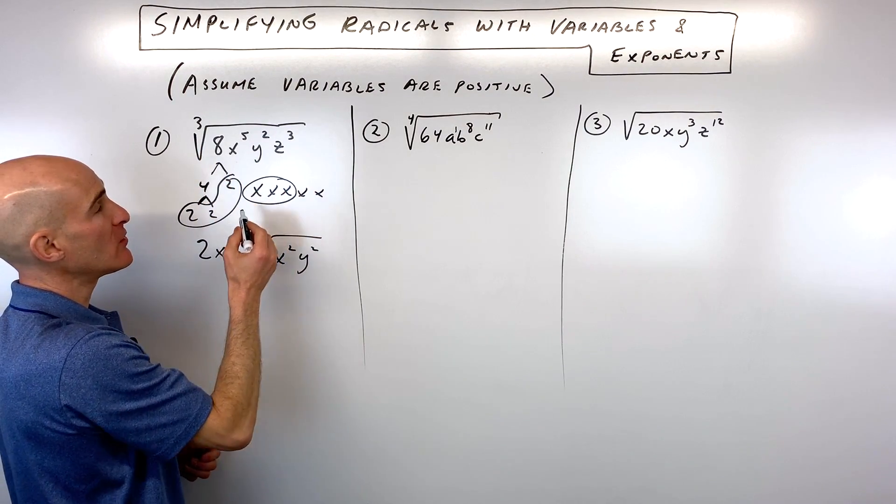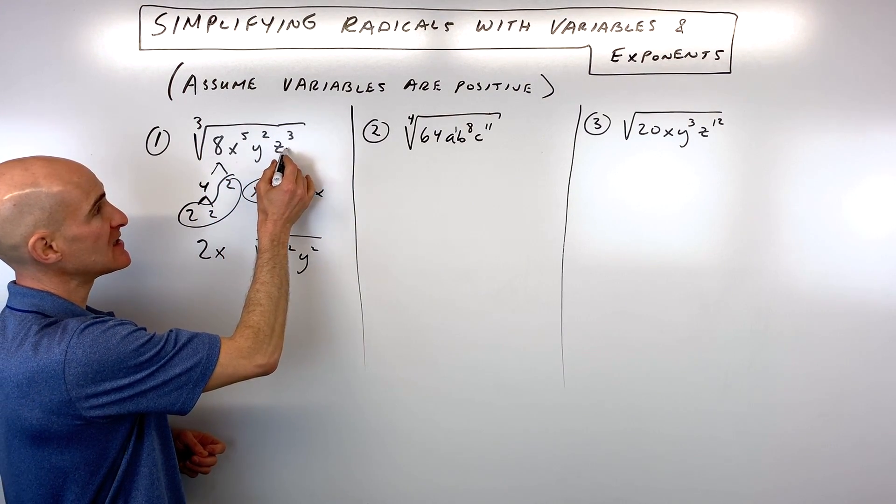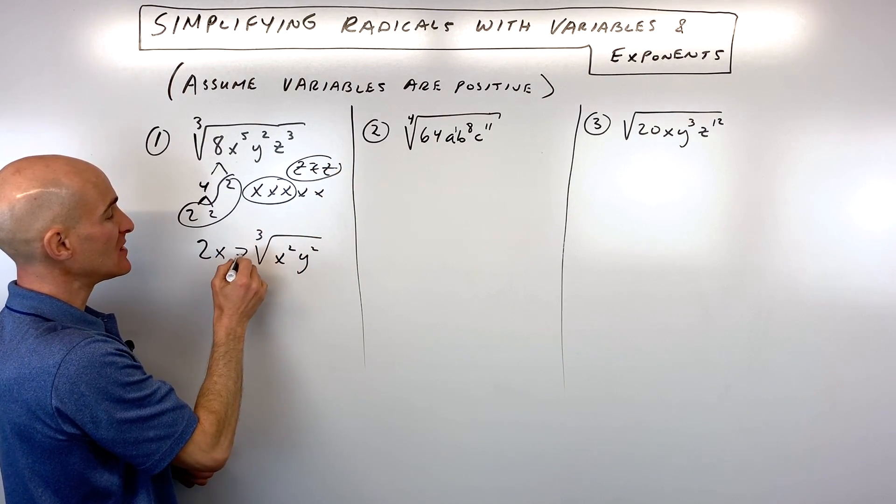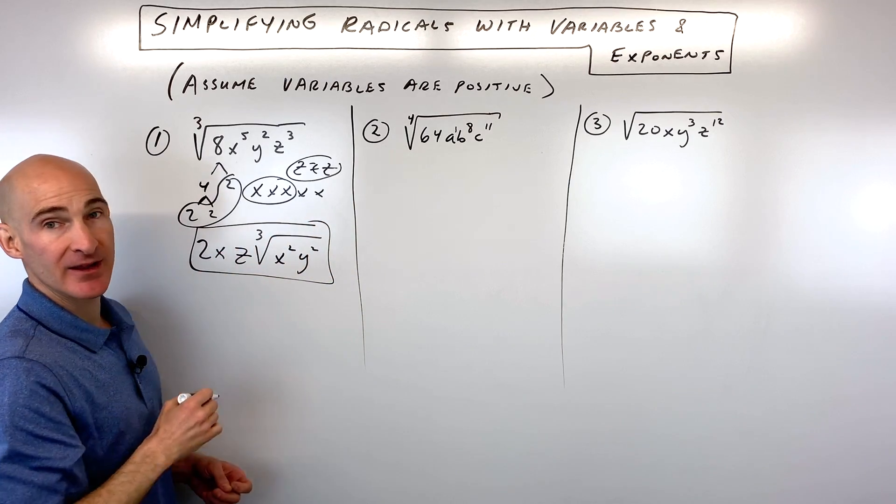And then here we're looking for a group of 3 with z cubed. You can see that's z times z times z. So we have a group of 3. That's going to be z with none left over. And you've simplified it.